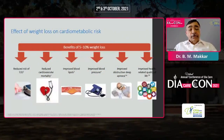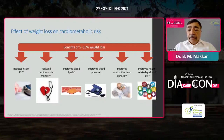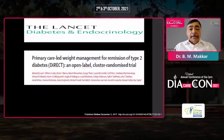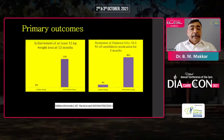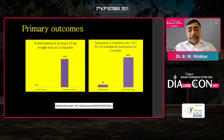There are enough studies which have clearly shown that if you induce 5 to 10% weight loss, there is significant reduction in the risk of type 2 diabetes, reduced cardiovascular mortality, improvement in lipid profile, reduction in blood pressure, improvement in sleep apnea, and overall improvement in quality of life. The DiRECT study published in 2017 by Roy Taylor clearly showed that if you are able to induce 15% weight loss, almost 46% of people get into remission of diabetes.